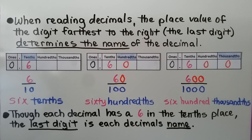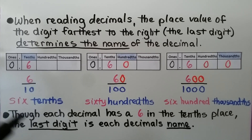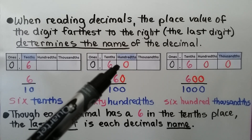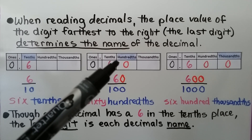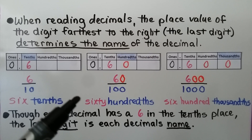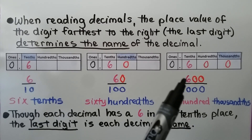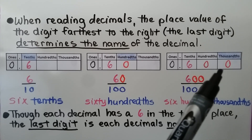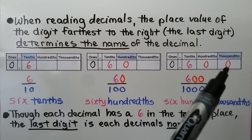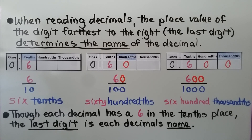When reading decimals, the place value of the digit farthest to the right — the last digit — determines the name of the decimal. So here we have a six in the tenths place: it's six-tenths. Here we have a six in the tenths place but a zero in the hundredths place; the last digit is zero, so it's sixty hundredths. And here we still have a six in the tenths place, but zeros in the hundredths and thousandths places, so it's six hundred thousandths. The last digit is the decimal's name.